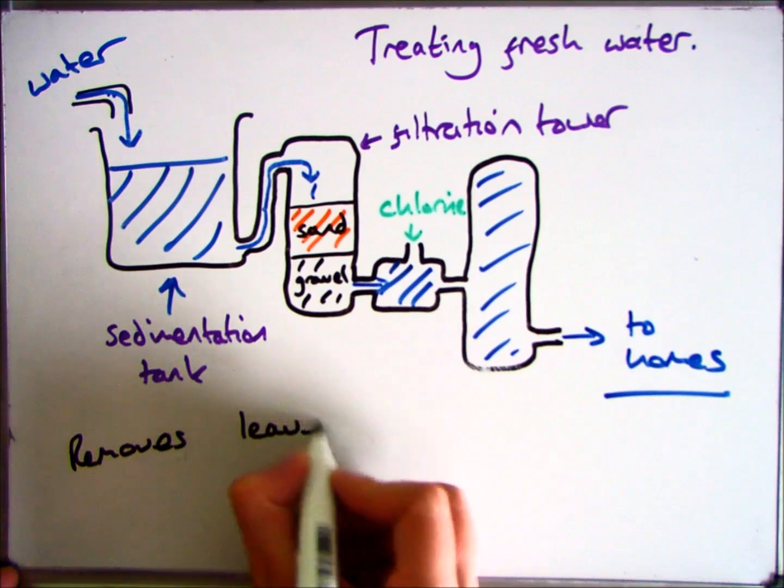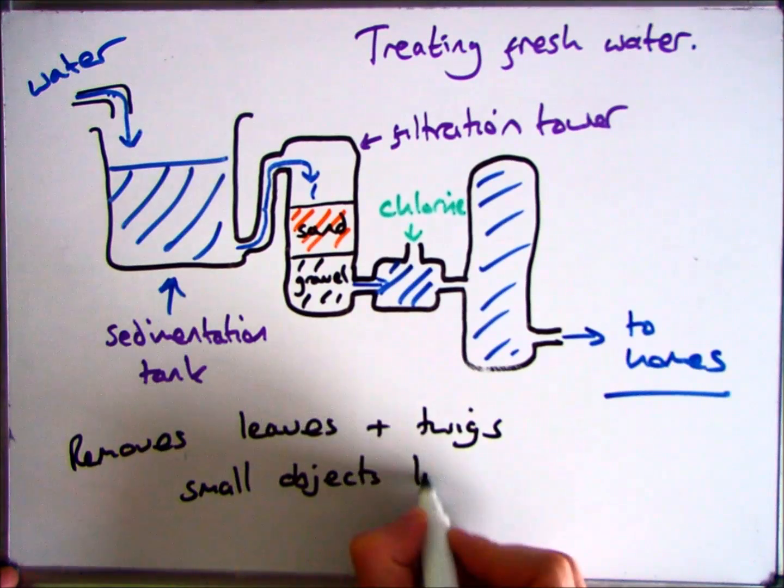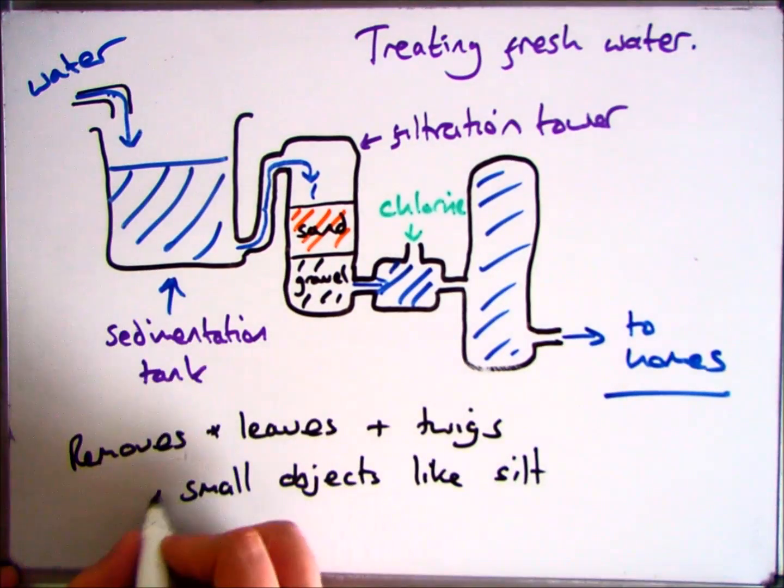Main benefits of this method then: it removes any leaves and twigs that are built up in the stream or in the aquifer. Any small objects like silt get taken out.